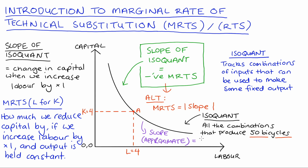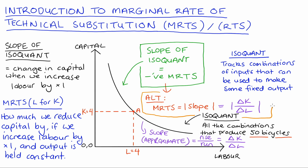If we want an approximation to the slope of a curved isoquant, we can use rise over run with discrete changes, just like with the straight line. We go between two points along the curve, take the change in capital (rise), divide by the change in labour (run), and get a slope value. The absolute value of ΔK over ΔL as we move along an isoquant — with output held fixed — is the simplest formula for MRTS you'll find in your textbooks.